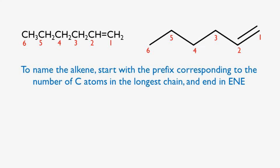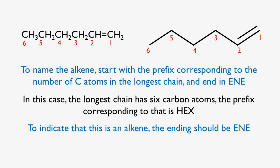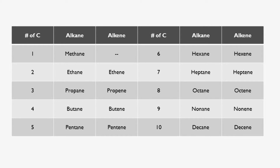Rule two. To name the alkene, start with the prefix corresponding to the number of carbon atoms in the longest chain and end it in -E-N-E. In this case, the longest chain contains six carbon atoms, which corresponds to the prefix hex. To indicate that this is an alkene, we add -E-N-E to the end, and thus the longest chain is called hexene. However, the name is not yet complete.